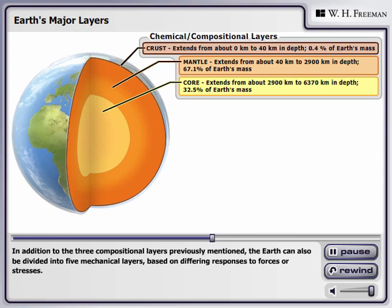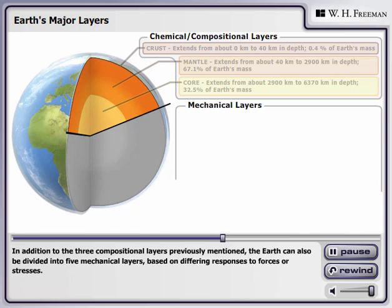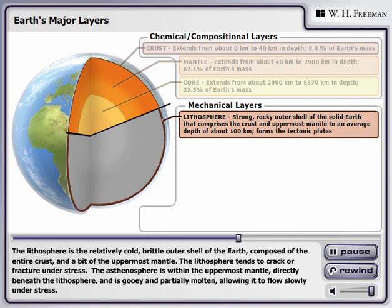In addition to the three compositional layers previously mentioned, the Earth can also be divided into five mechanical layers based on differing responses to forces or stresses. The lithosphere is the relatively cold, brittle outer shell of the Earth, composed of the entire crust and a bit of the uppermost mantle. The lithosphere tends to crack or fracture under stress.